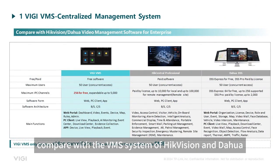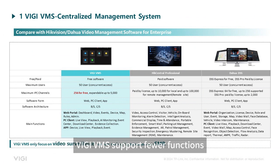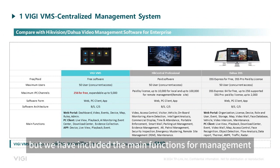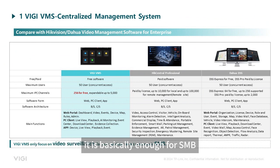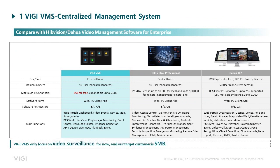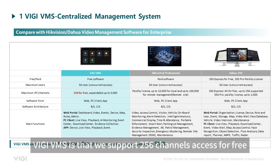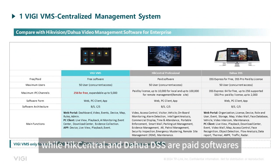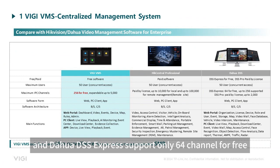Compared with the VMS systems of Hikvision and Dahua, VG VMS supports fewer functions, but we have included the main functions for management and it is basically enough for SMB. The main competitive advantage of VG VMS is that we support 256 channels access for free, while Hikcentral and Dahua DSS are paid software, and Dahua DSS Express supports only 64 channels for free.